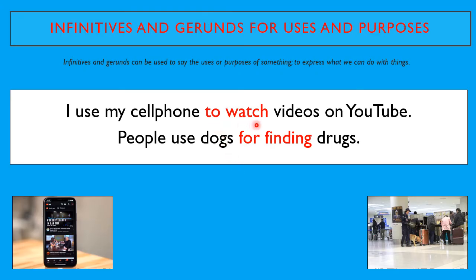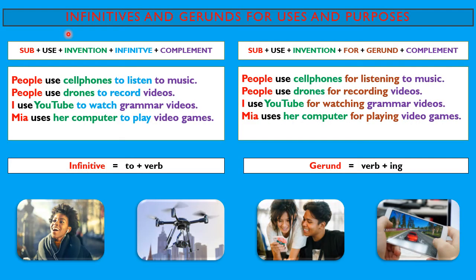After 'to', you use the verb in the base form — this is the infinitive. And after 'for', we need to use the verb in the gerund form, the verb with -ing. To create sentences with the infinitive, we use: subject + use + the invention (the object or thing that you use) + the infinitive (which is 'to' plus the verb in the base form) + the complement. For example: People use cell phones to listen to music. People use drones to record videos.